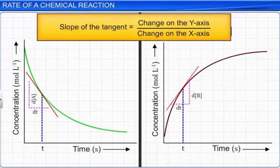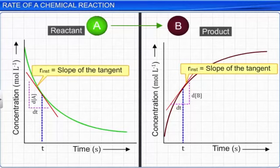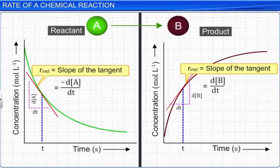The change on the y-axis divided by the change on the x-axis gives the slope of the tangent. From the graph, the slope of the tangent gives the instantaneous rate: R_instant = −dA/dt = dB/dt.